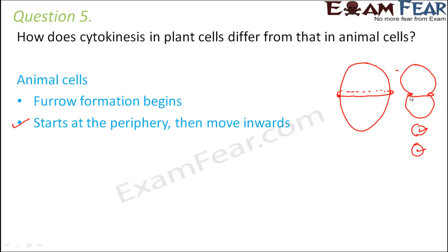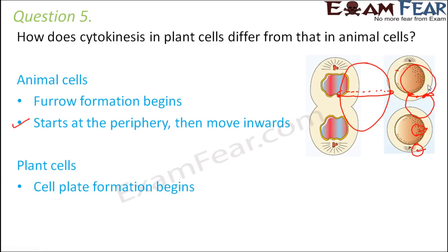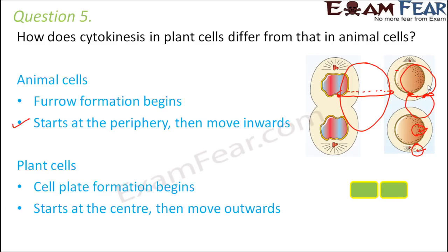In plant cells, cell plate formation begins — it starts at the center and then moves outward. So a cell plate starts forming from the center and moves outward, and then the cell plate splits the cell into two halves. So that is how cytokinesis takes place in plant cells — starting from center outward, as opposed to animal cells where the furrow starts from the periphery and moves inwards.